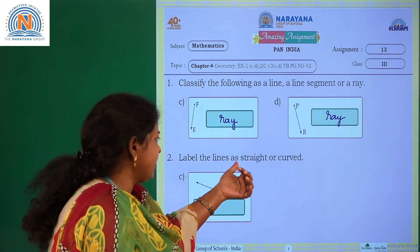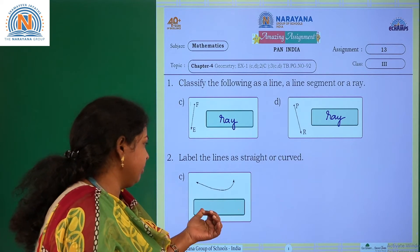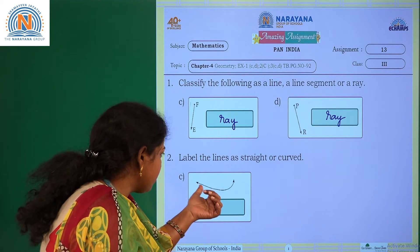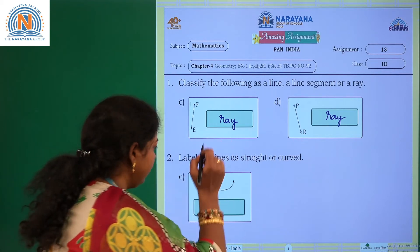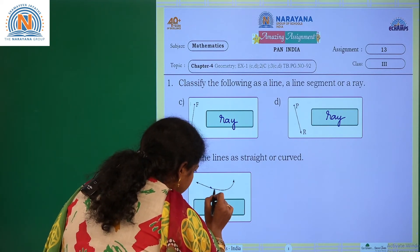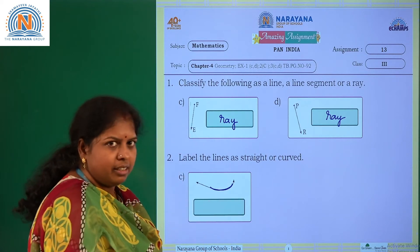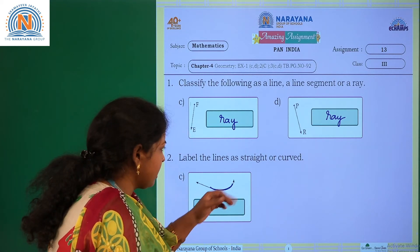Now, label the lines as straight or curved. If you observe the given image, it looks like a curve. So it is not straight.